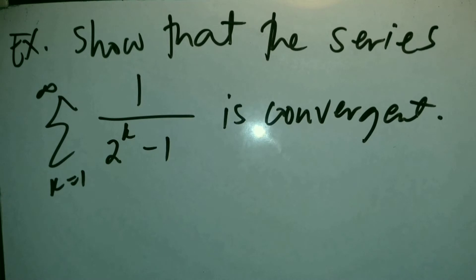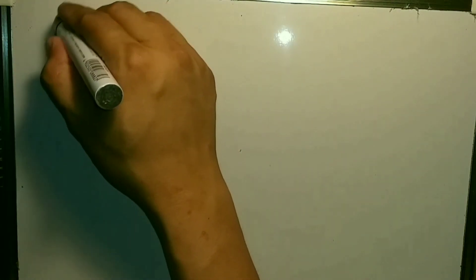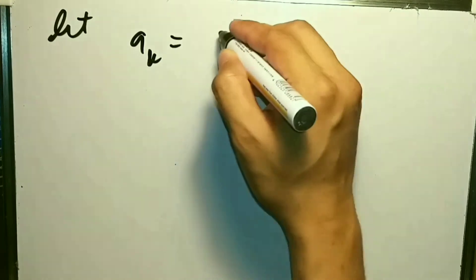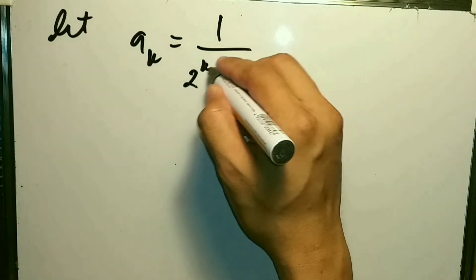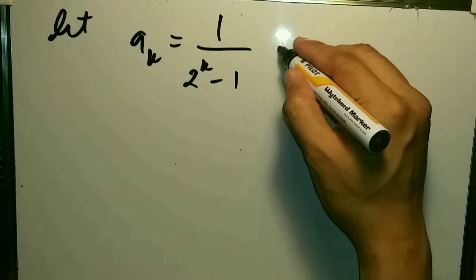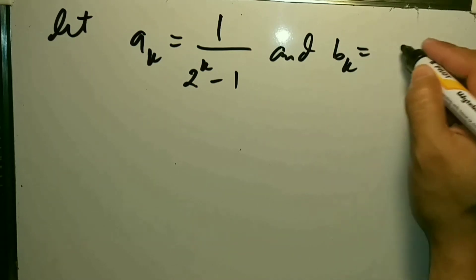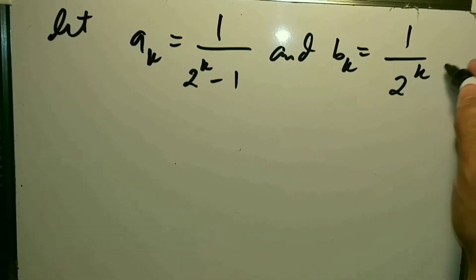For example, show that the series summation of 1/(2^k − 1) is convergent. To do that, we let a_k = 1/(2^k − 1) and b_k = 1/2^k.